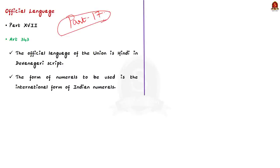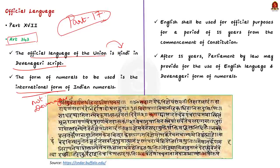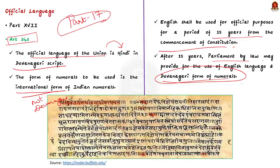The first one is article 343. See, it deals with the official language of the union. According to article 343, the official language of the union is Hindi in Devanagari script and the form of numerals to be used is the international form of Indian numerals. See, clause 2 of the same article states that English shall be used for official purposes for the period of 15 years from the commencement of the constitution. It is also mentioned that during this period, the president may authorize the use of Hindi in addition to English. Now, coming to clause 3, after 15 years, parliament by law may provide for the use of English language and Devanagari form of numerals for the purpose specified in the law. So, it means that after the end of 15 years, English will be used only for the purpose specified by a law of the parliament.